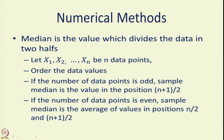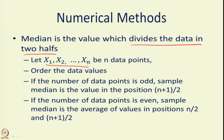Another such value is called the median. Median is another central tendency value in which it actually divides the data into two halves. If you have x1, x2, x3, ..., xn as your n data points, you first order these values, since they need not be in ascending or descending order. You call them y1 ≤ y2 ≤ ... ≤ yn — the same data points but now ordered.